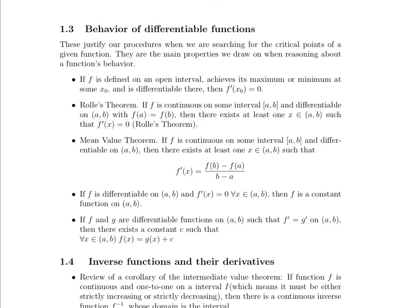For the mean value theorem, we say that if f is continuous on some closed interval from a to b, and it's differentiable on the open, largest open interval in that closed interval, then there exists at least one element in that open interval such that the derivative there is equal to f(b) minus f(a) over b minus a. Now this is interesting because this is also the average rate of change between the endpoints of the interval. You probably did some average rate of change questions in your univariate calculus class.